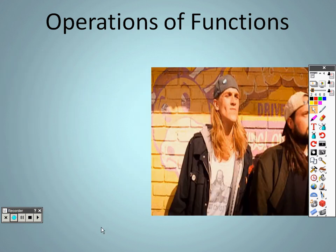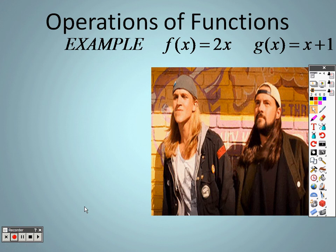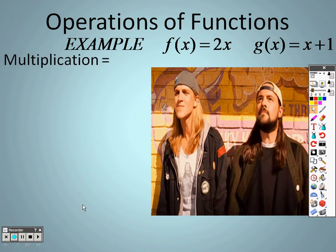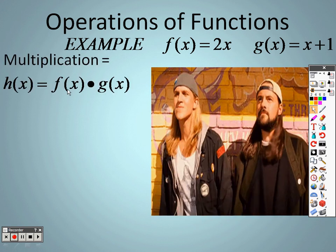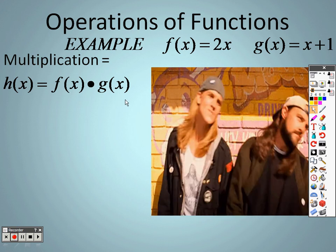Let's take a look and see what we have next here. Operations of functions continuing on here with the same examples. Now we're talking about multiplication. Basically it's f of x times g of x. That's all that that basically is. You're multiplying the two items together.